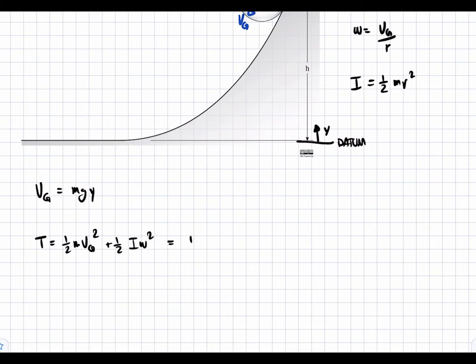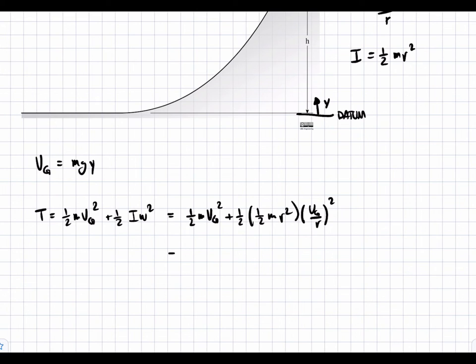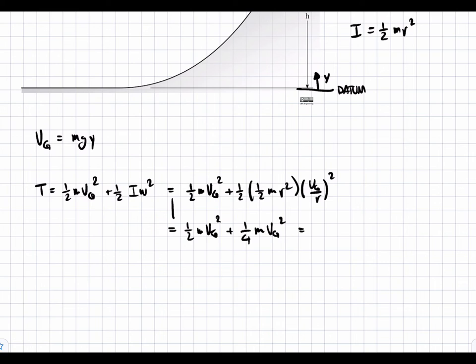If we plug this into this equation, we get that one-half m vg squared plus one-half I, which is one-half m r squared times omega squared, which is vg over r all squared, reduces to the following. This is three-fourths m vg squared.